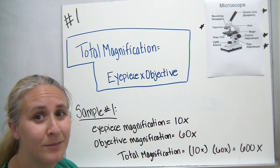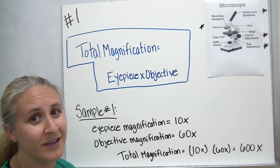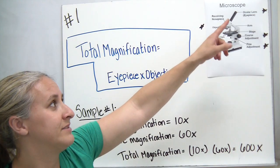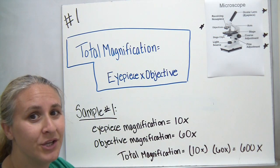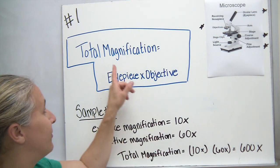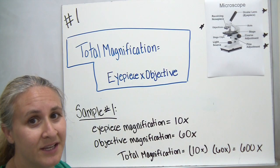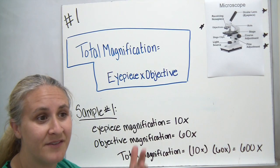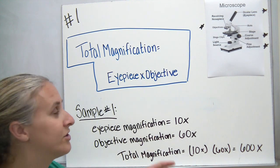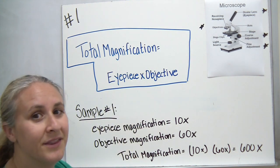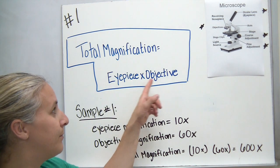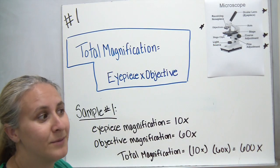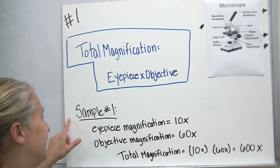In order to figure out how much the microscope is magnifying your image in total — with the objective lenses and the eyepiece — you would need to calculate it. So in order to calculate total magnification, how much your image or your specimen is being magnified, you would multiply the eyepiece magnification by the objective lens magnification to figure out how much it's magnifying totally.